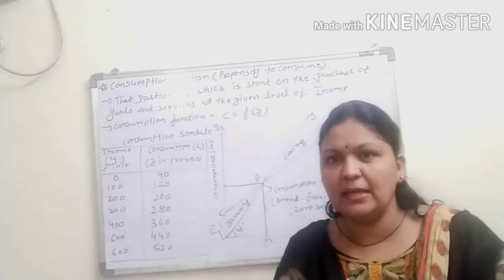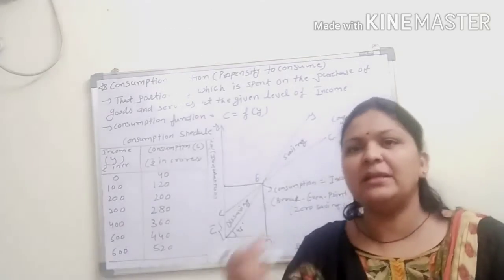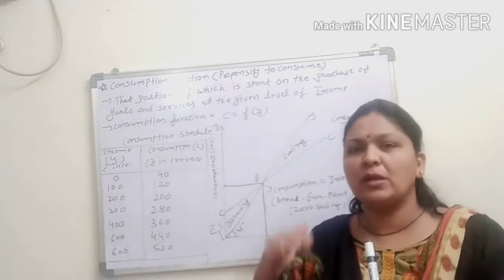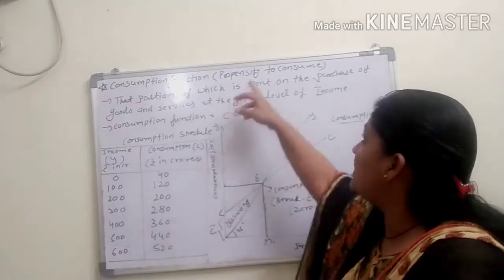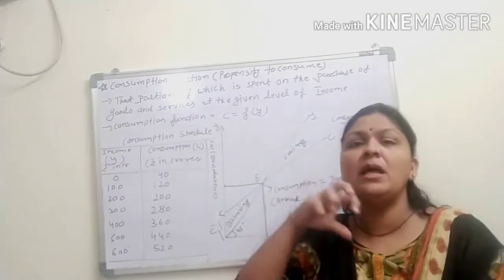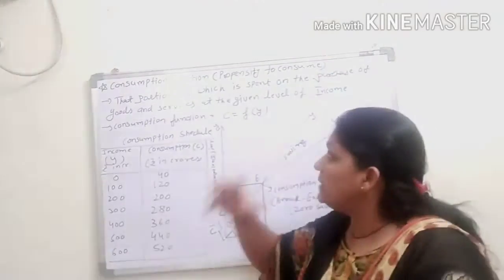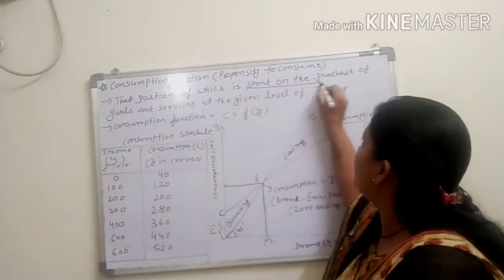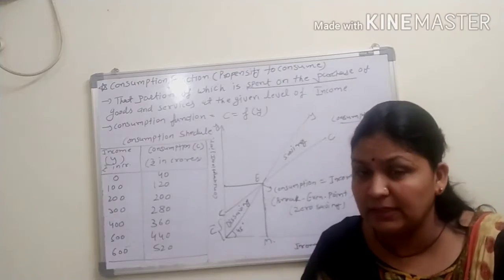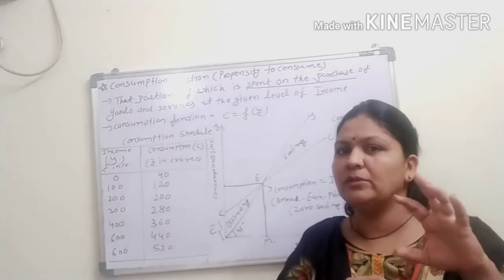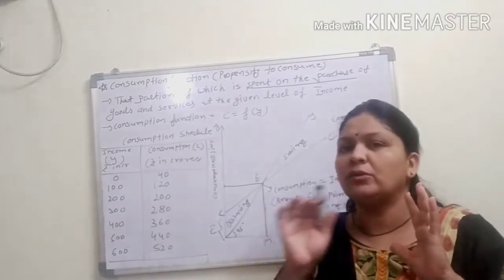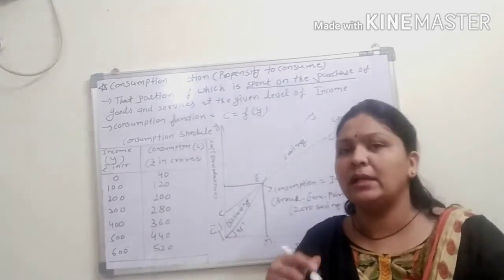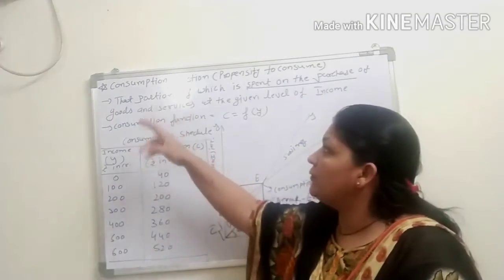When your income is increased, simultaneously your consumption capacity will also be increased. We decide the consumption function with the help of income status only. Consumption function refers to that proportion which is spent on the purchase of goods and services in the economy. We are not taking only goods — when we are talking about goods, simultaneously we are talking about services of the economy also.